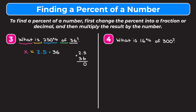6 times 5 is 30, put the 0 here and carry the 3; 6 times 2 is 12 plus 3 is 15. Moving to the second line, put a 0 on the right; 3 times 5 is 15, carry the 1; 3 times 2 is 6 plus 1 is 7. Adding these two lines: 5 plus 5 is 10, put the 0 and carry the 1; 1 plus 1 plus 7 is 9. We have one digit to the right of our decimal point in our original number, so we want one digit to the right in our answer, giving us 90. X equals 90, meaning 250% of 36 is 90.